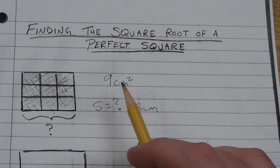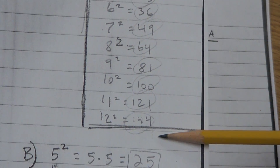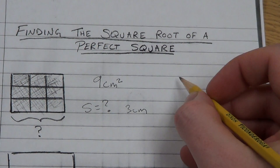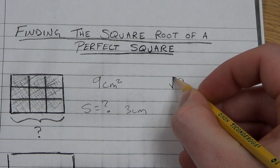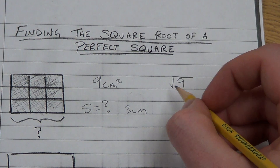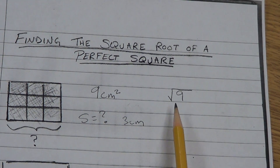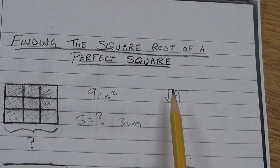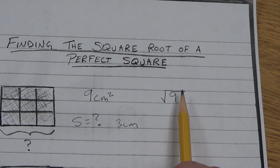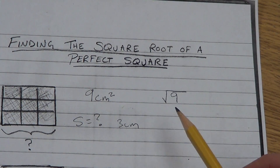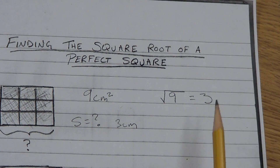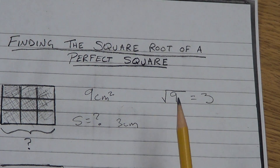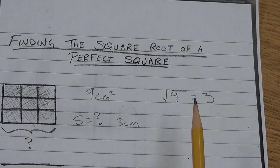9 is a perfect square — we talked about what perfect squares are in the last video. The way I can find it mathematically is written with a symbol that looks sort of like a check mark with a division house. This means the square root of 9. What I want to know when I write a square root is: what number times itself will equal this number? The answer is 3, because 3 times 3 is 9. So the square root of 9 equals 3.